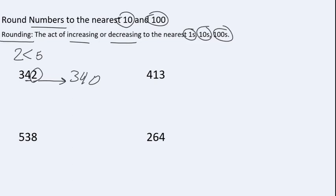342 rounds down to 340. It means we keep four, which is in the tens place, the same, and write a zero in place of the digit in the ones place. Now for the number 538, again before rounding, we underline the digit in the tens place.